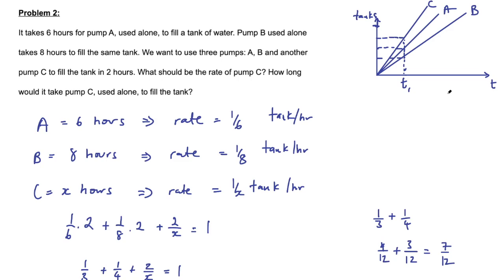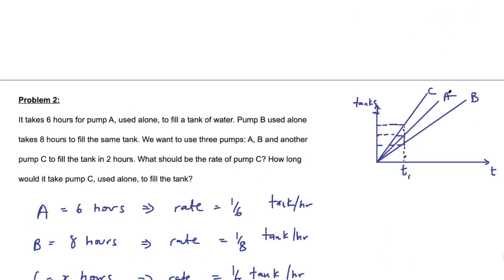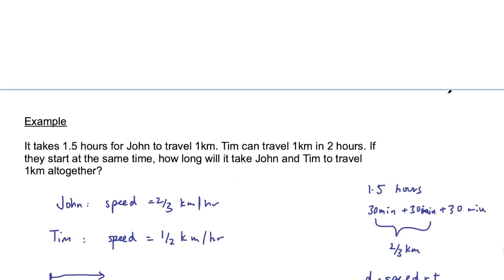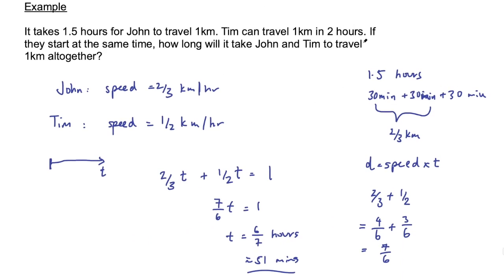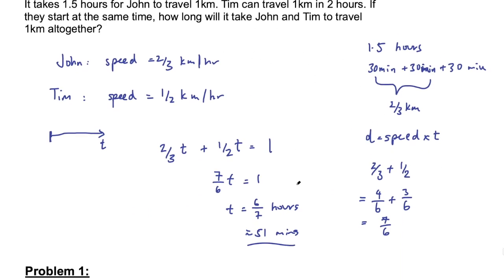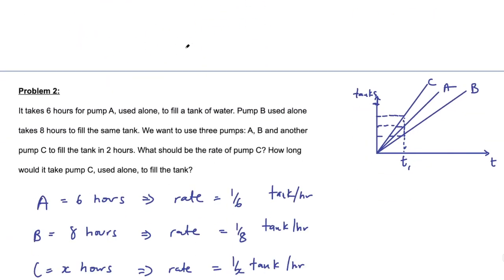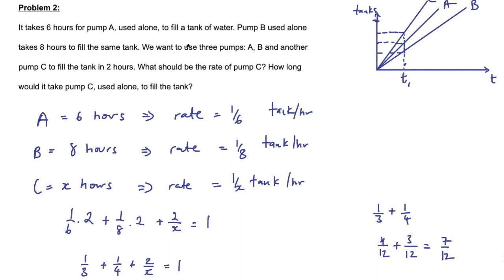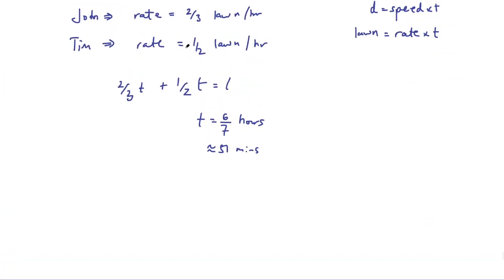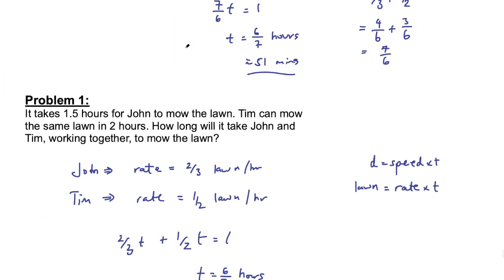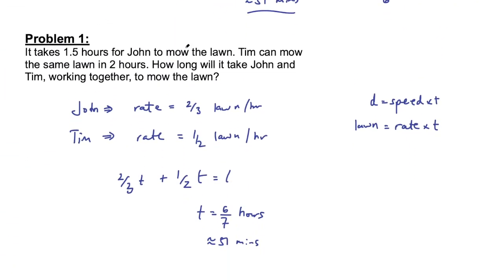Work rate problems can be confusing because they are not the types of rates we typically think of, such as speed, distance, and time. They're often lawns per hour or tanks per hour, which gets confusing. Hopefully you found this useful — please leave a like if you did, subscribe if you want to see more content, and I'll see you in the next one.